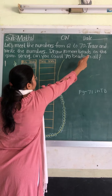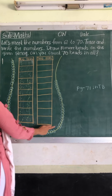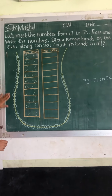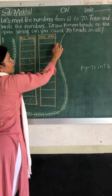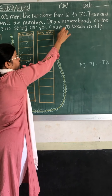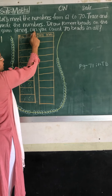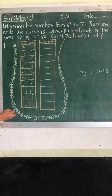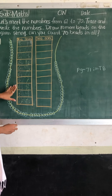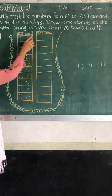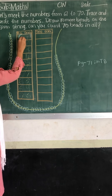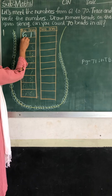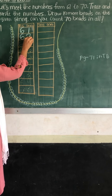Draw 10 more beads on the given string. There is already a string drawn here with 60 beads. So we have to draw another 10 beads here to make 70 beads total. Let's count them. First we trace these numbers. Here are the tens and ones: 6 tens and 1 one makes which number? 61. 6 tens and 2 ones makes which number? 62.